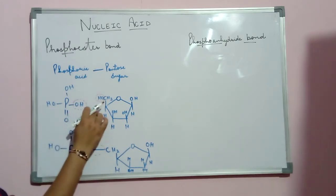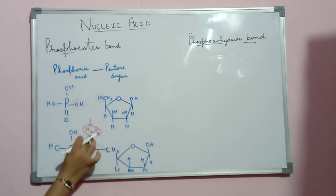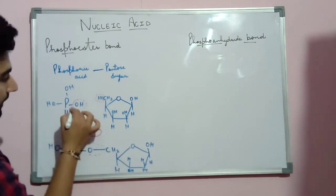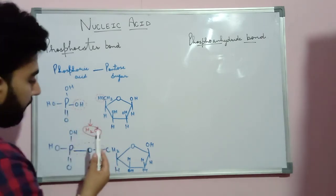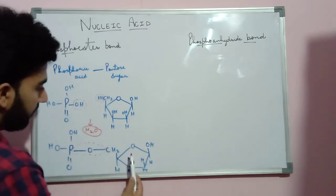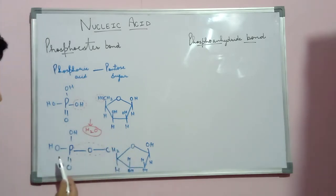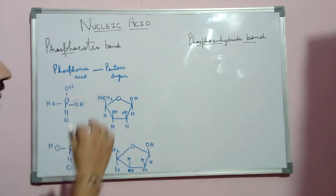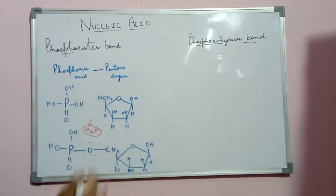From these two OH groups, H2O is removed. So what is left? Only one oxygen is left, and that one oxygen molecule forms a bond between this pentose sugar and the phosphoric acid molecule. Now I will show how the formation of the phosphoanhydride bond takes place.